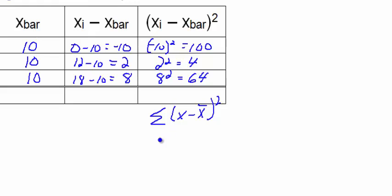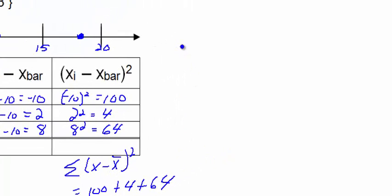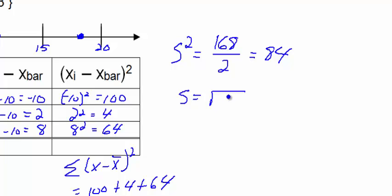So if we add up these deviations squared we get 100 plus 4 plus 64 which is a total of 168. To compute the sample variance s squared, we take that sum 168 and divide it by n minus 1 which is 2, and we get a value of 84. So sample variance is 84, standard deviation is the square root of the variance which is 84, which is approximately to two decimal places 9.17. So this value here is larger than data set 3 because we have more spread.